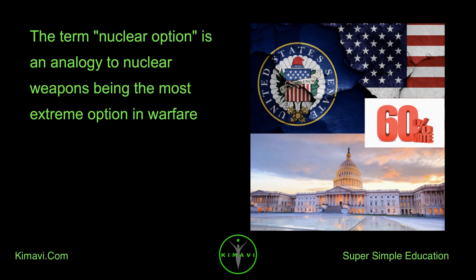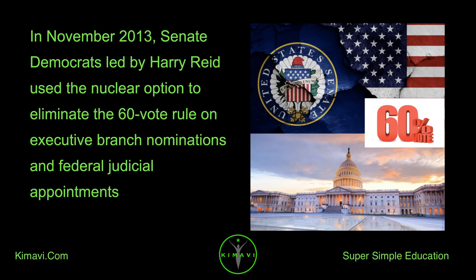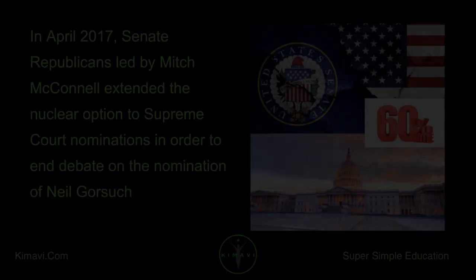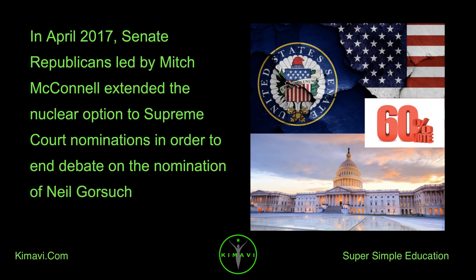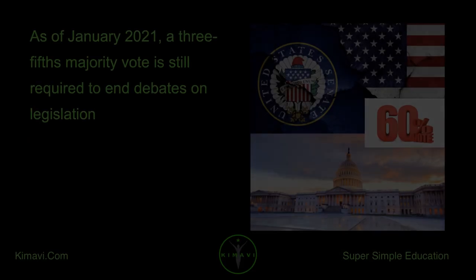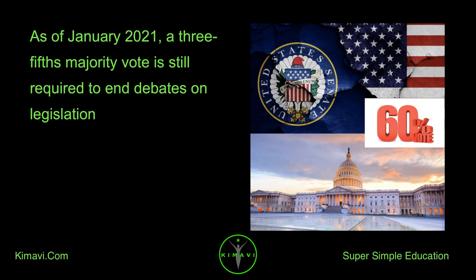The term nuclear option is an analogy to nuclear weapons being the most extreme option in warfare. In November 2013, Senate Democrats, led by Harry Reid, used the nuclear option to eliminate the 60-vote rule on executive branch nominations and federal judicial appointments. In April 2017, Senate Republicans, led by Mitch McConnell, extended the nuclear option to Supreme Court nominations in order to end debate on the nomination of Neil Gorsuch. As of January 2021, a three-fifths majority vote is still required to end debates on legislation.